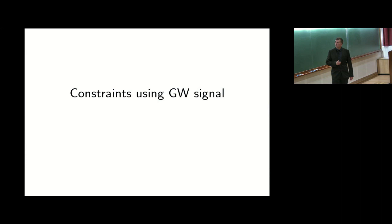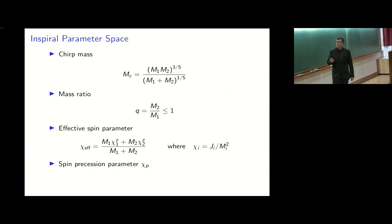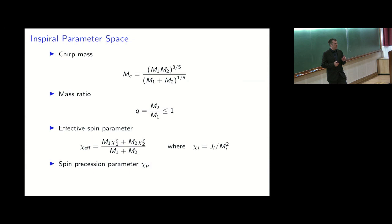A quick introduction to the parameter space. We have the chirp mass, which is a combination of the two neutron star masses and is measured almost exactly. Then we have the mass ratio, which is not constrained as well, and the effective spin parameter — a mass-weighted combination of the aligned spin components. Mass ratio and spin are somewhat degenerate, which is why almost all results give two answers: one assuming the initial stars are not rapidly rotating, and the other without that assumption. We also have a spin precession parameter that didn't seem to play much of a role for the detected binary neutron star event.